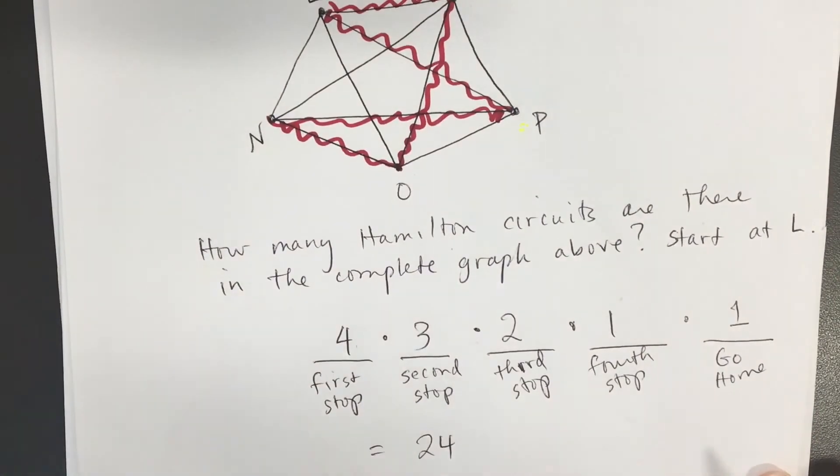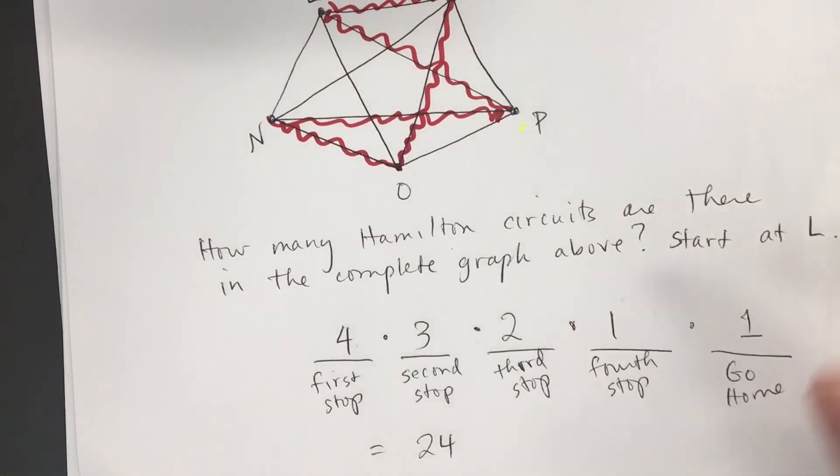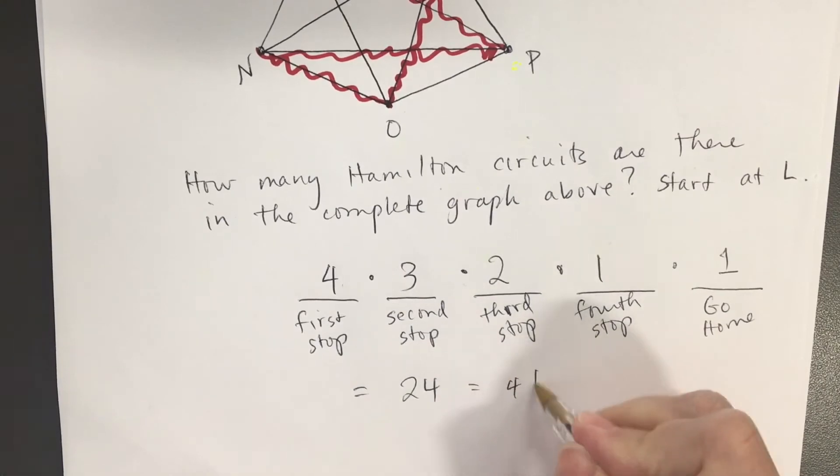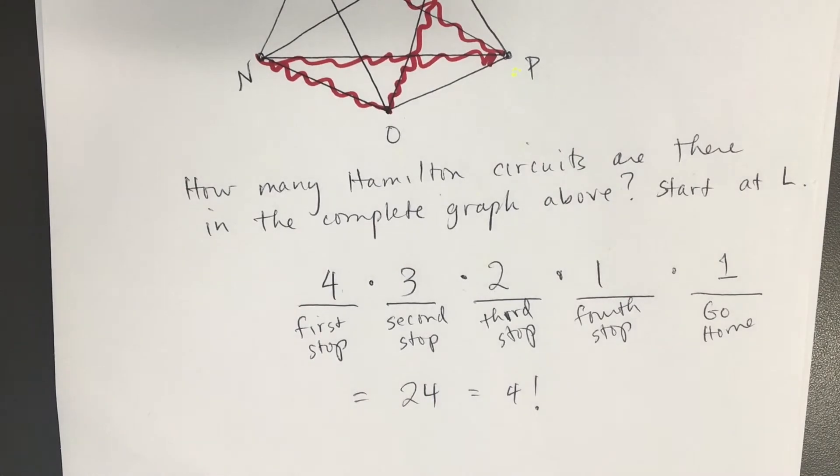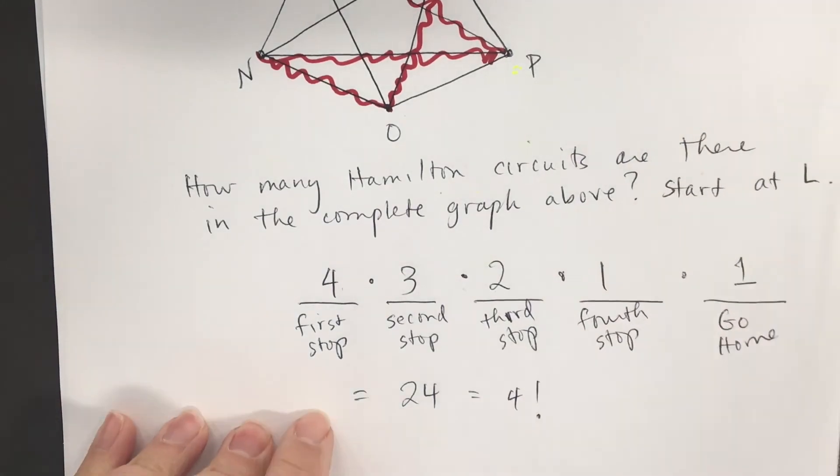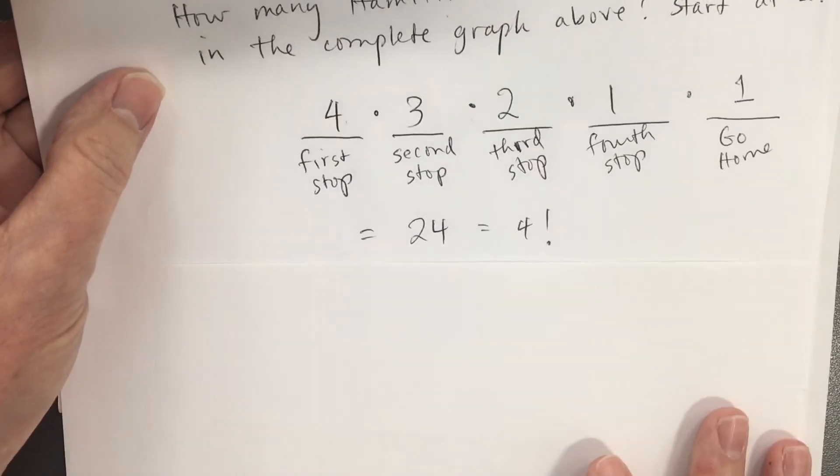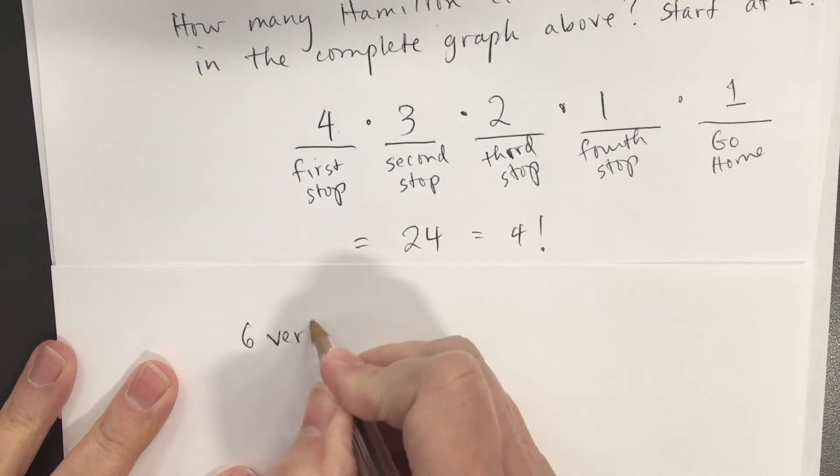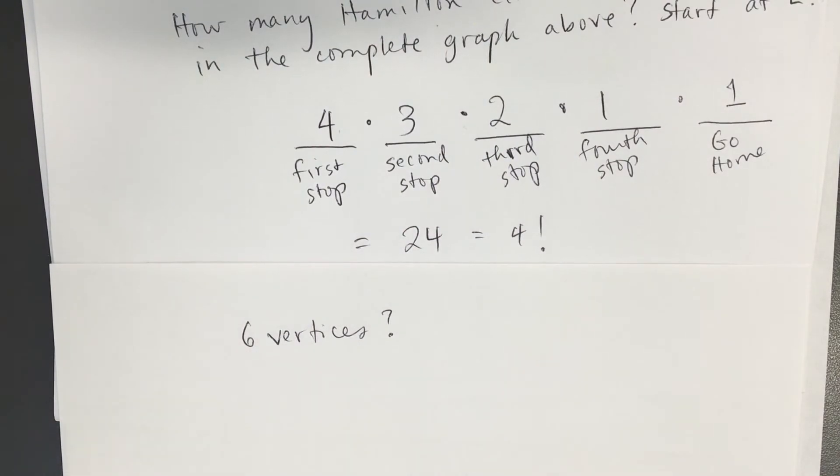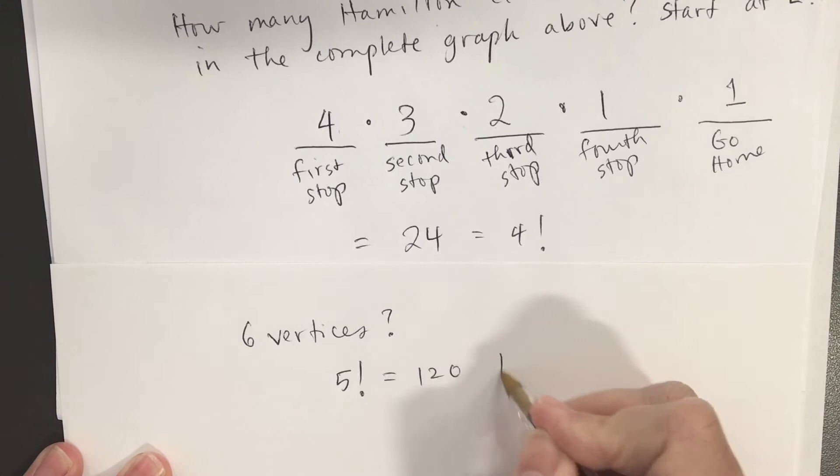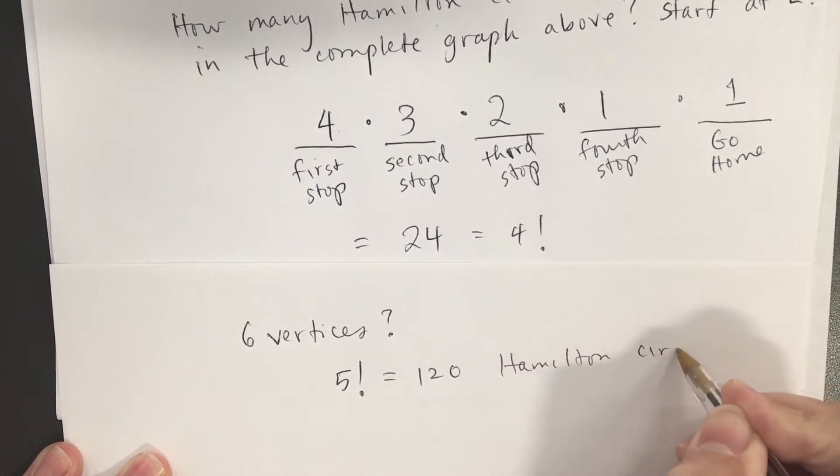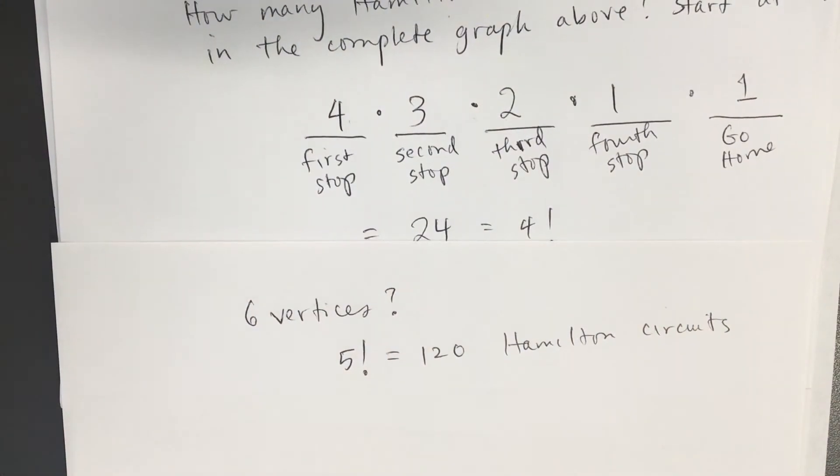How else could I have written that? Who remembers from chapter 11? That's 4 factorial. Can you take a guess at a formula for this? I had 5 vertices. It's 4 factorial. What if I had 6 vertices? It would be, my first stop, I'd have 5 choices. It would be 5 factorial, 120 Hamilton circuits. The formula for the number of Hamilton circuits is going to be the number of vertices minus 1.